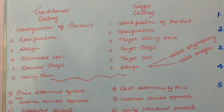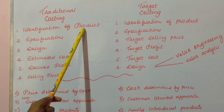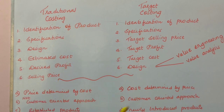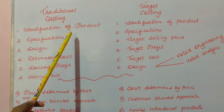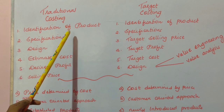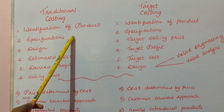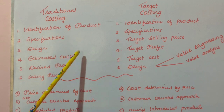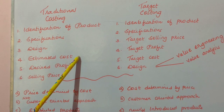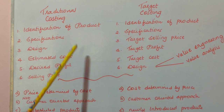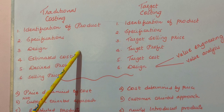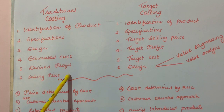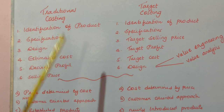In traditional costing: first, identification of the product; next, specification of features; on the basis of specifications, the product is designed; and this design is sent to the cost accounting department where the cost is estimated. Once the cost is estimated, a certain percentage of profit is added, and the ultimate figure is known as the selling price. This is traditional costing.